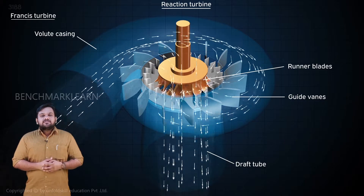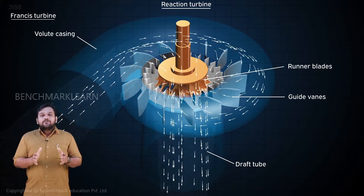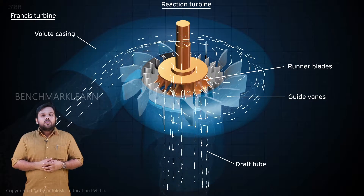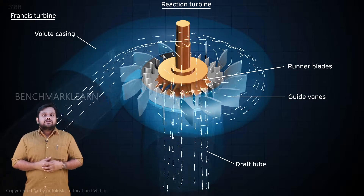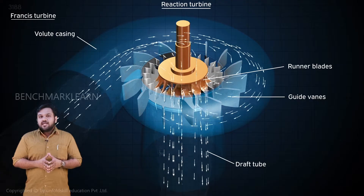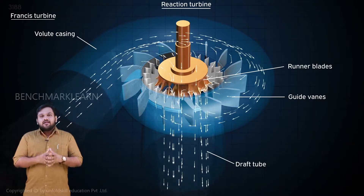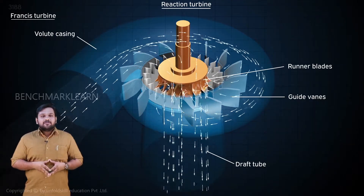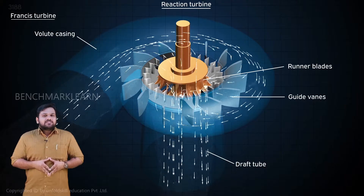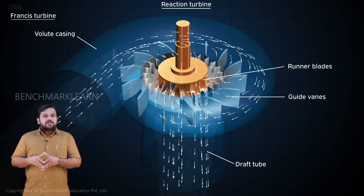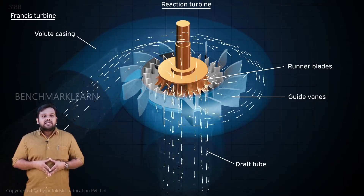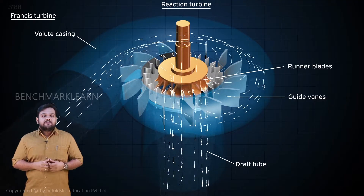During the process, the entire pressure energy of water is converted into kinetic energy. So the water after passing over the runner possesses low pressure. The kinetic energy is also converted by the reduction in velocity when it flows over the blade.